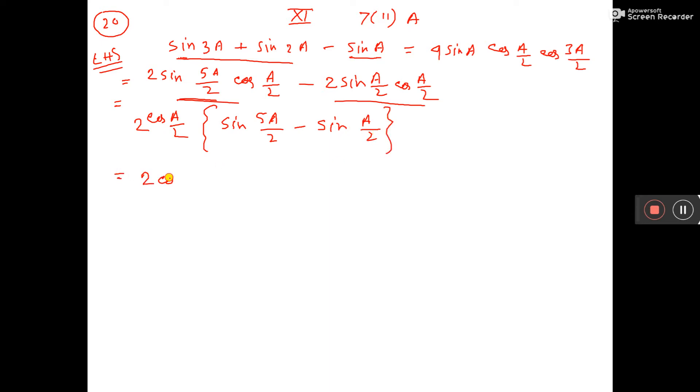Again, apply formula: sin c minus sin d, what is the formula? 2 cos c plus d by 2, that is plus 6a by 4, that means 3a by 2.